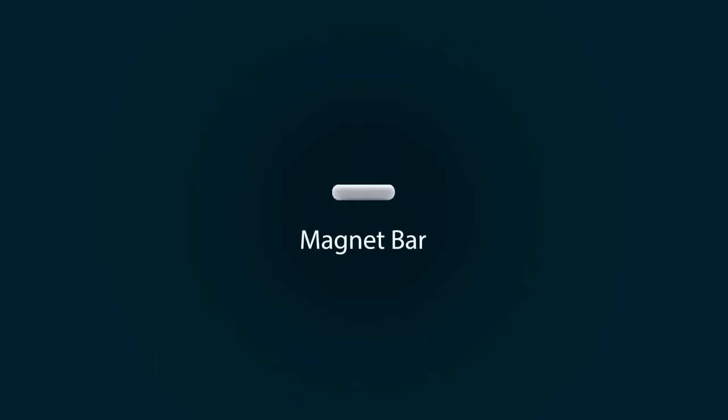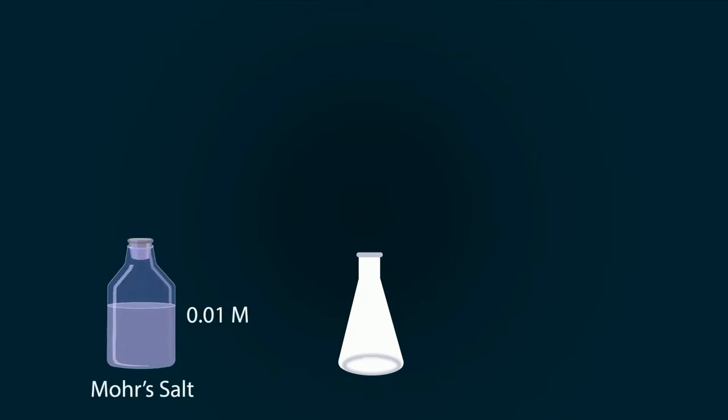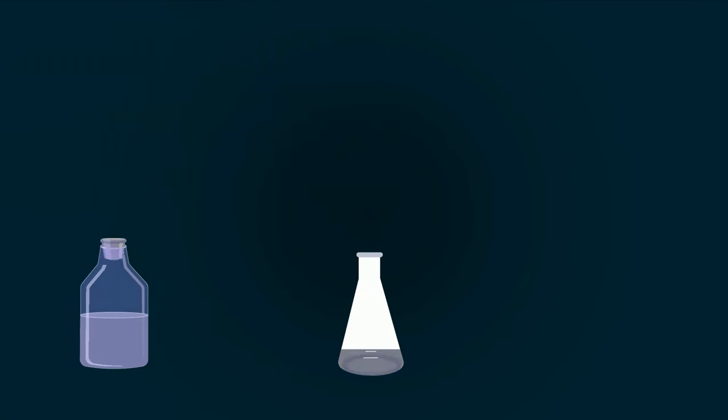First of all, take a conical flask. Now pour 0.01 molar Mohr's salt into it with the help of the pipette. Pipette out 20 milliliters of Mohr's salt and put it into the conical flask.